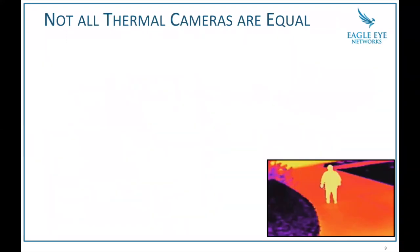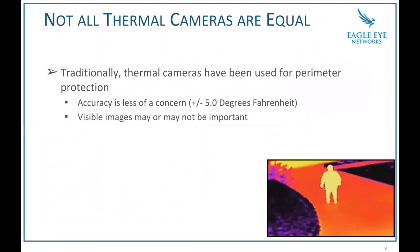Not all thermal cameras are the same. A lot of people from the video surveillance industry think about thermal cameras like this — a camera used to detect a person, where accuracy to within five degrees Fahrenheit is fine if you just need to say 'there's a person there' or 'there's a vehicle.' You're not really concerned about the details of that person. The visible image may or may not be as important because detecting that somebody is there is enough information for you to act on.